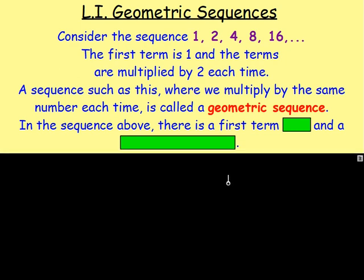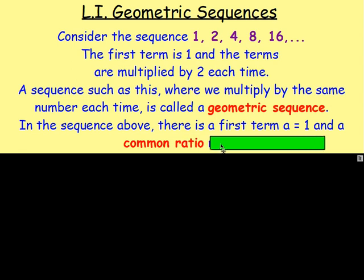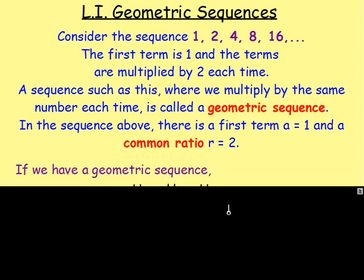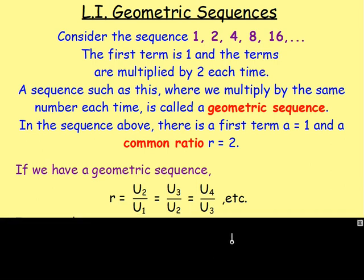In the sequence above, the first term is one, so you can say a equals one. A is your first term. And there is what's known as a common ratio, which is denoted r. Because you're multiplying by two every time, you would say r equals two. In order to find your common ratio, all you have to do is take the second term and divide it by the first, or the third term divided by the second, or the fifth term divided by the fourth — basically, take the next term and divide it by the previous term. That will give you the common ratio.